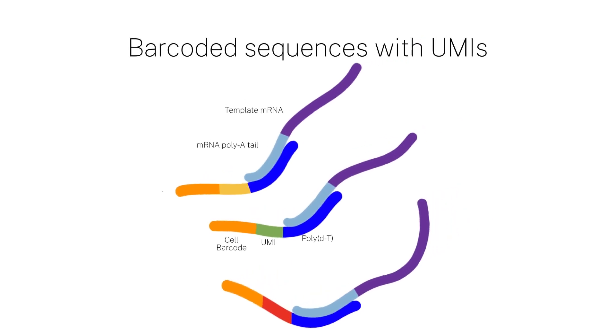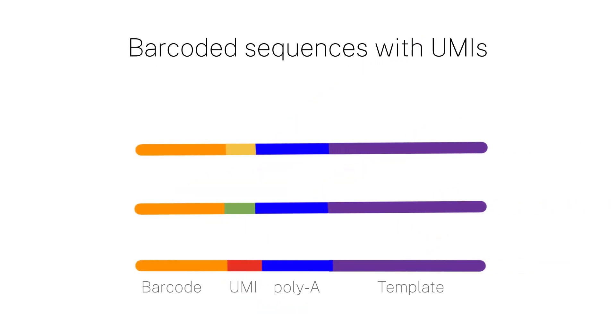The cell contents are then washed away from the bead. The resulting material consists of mRNA reads concatenated with a barcode and UMI, which can now be sequenced.